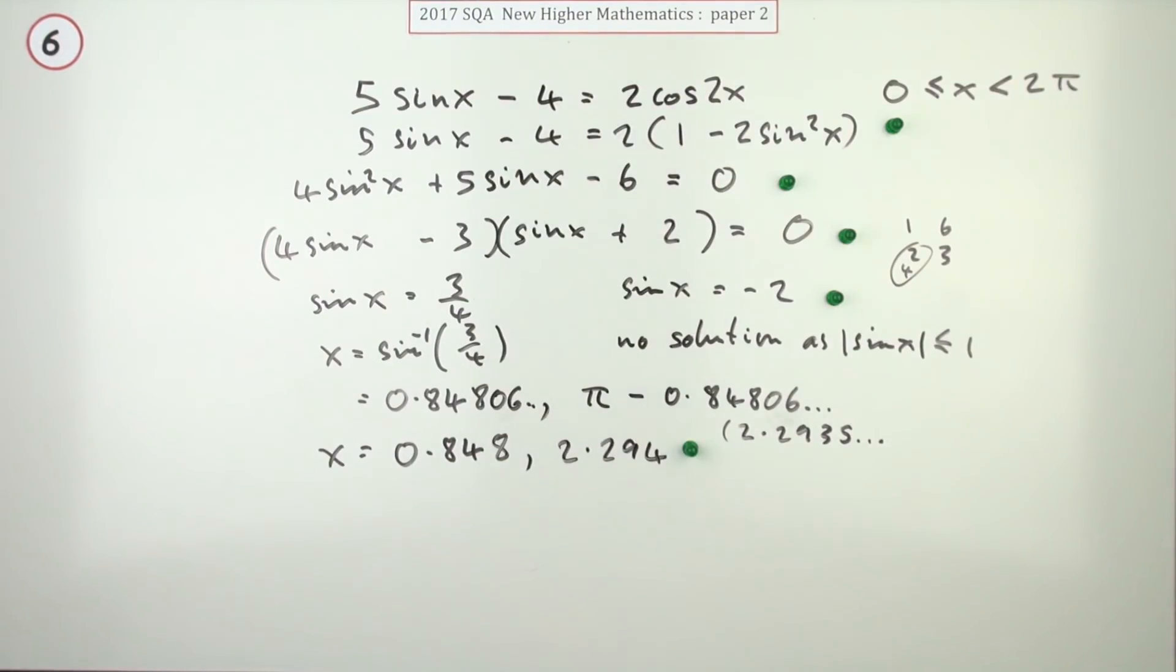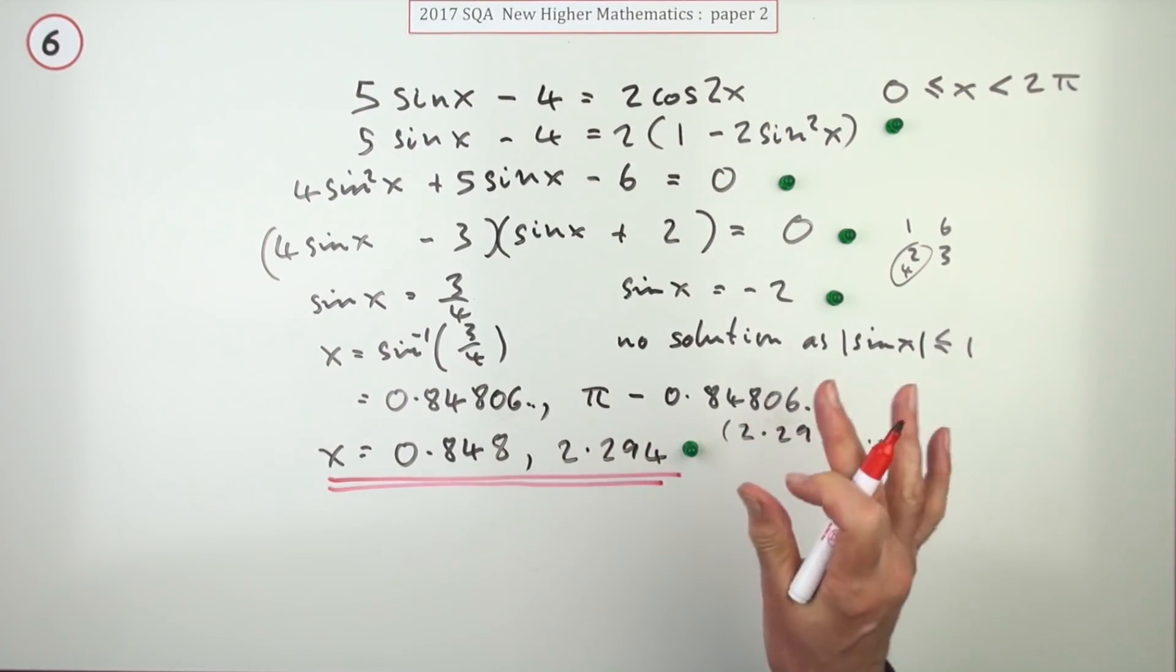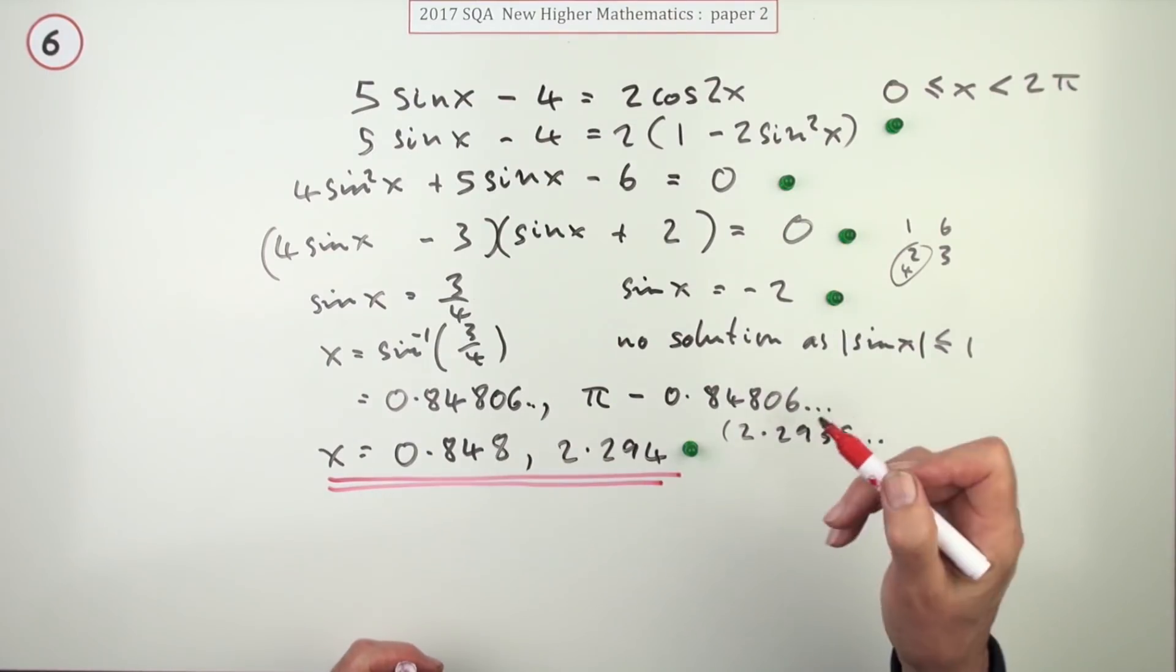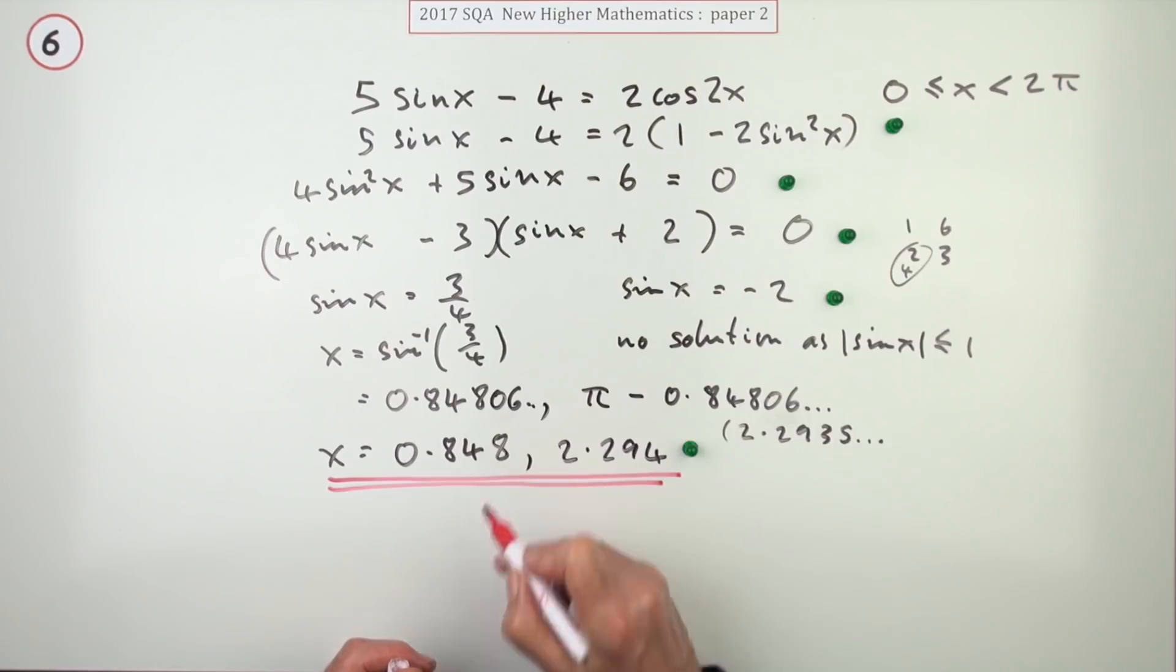That's the last mark and they will accept various roundings down to no fewer it says than two significant figures. But to have the same degree of accuracy that you normally give with degrees, it's really three decimal places.